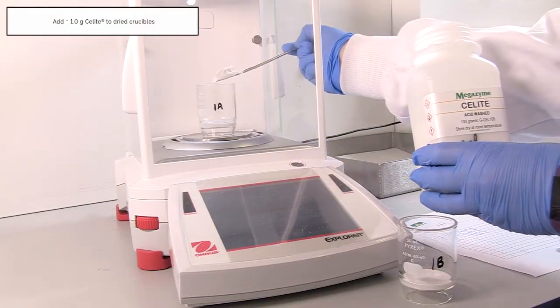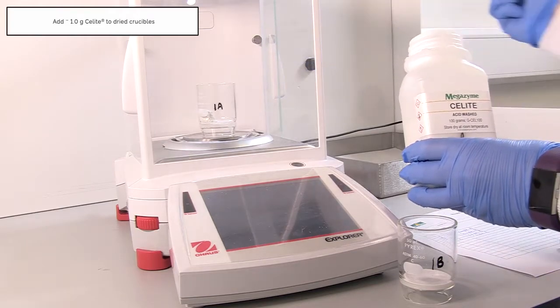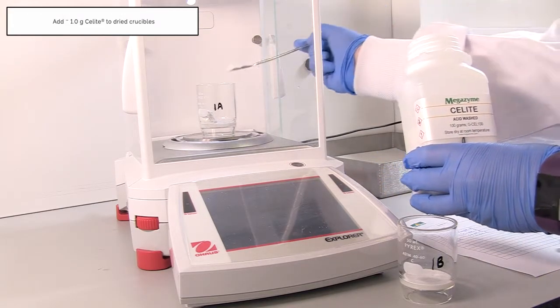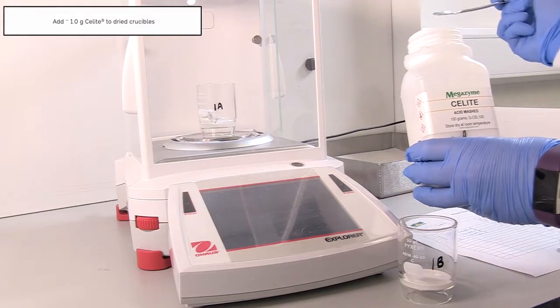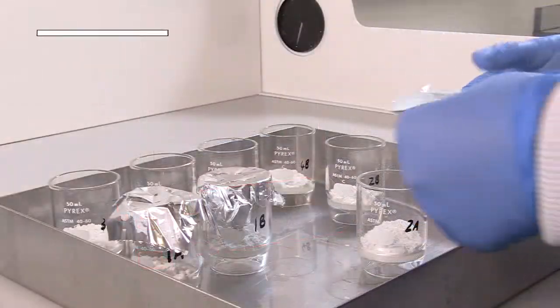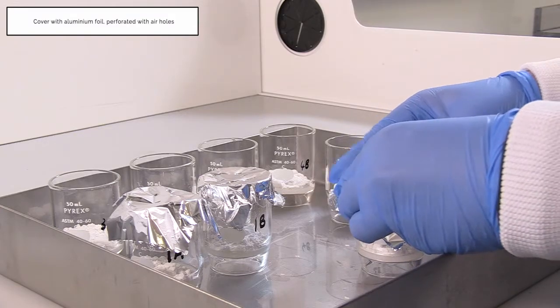Add approximately one gram of celite to dried crucibles. Cover with aluminum foil perforated with air holes.